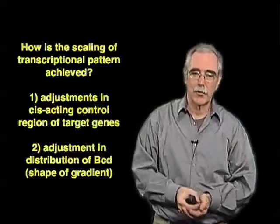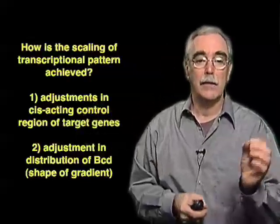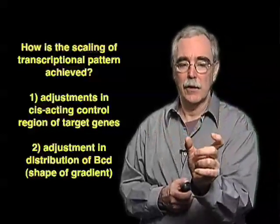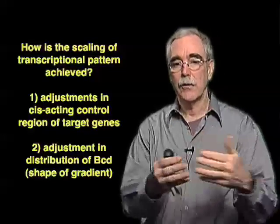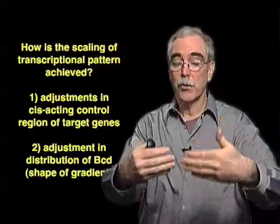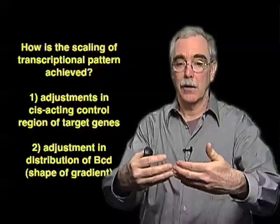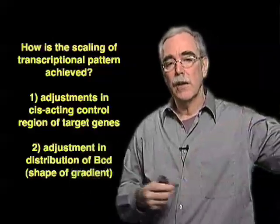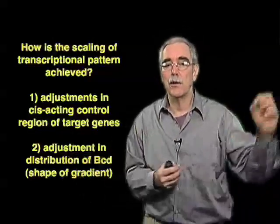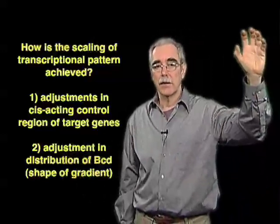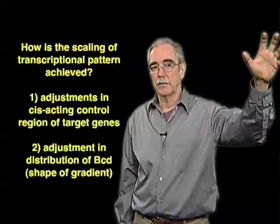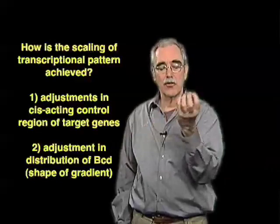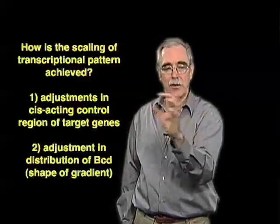There are really two simple ways you could think about it. One way is that each of these genes, like hunchback or any of the targets of bicoid activation, is going to have a control region which responds to bicoid concentration. And as you change the length of the egg, one strategy would be to keep the bicoid gradient the same shape and the concentration distribution the same, yet change the cis-acting control regions of each of these genes — adjust them during evolution.